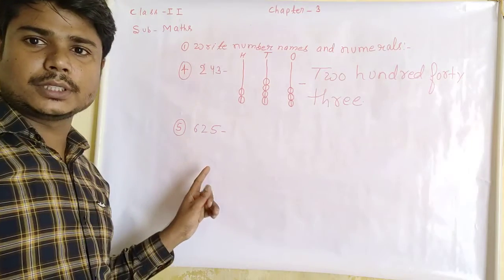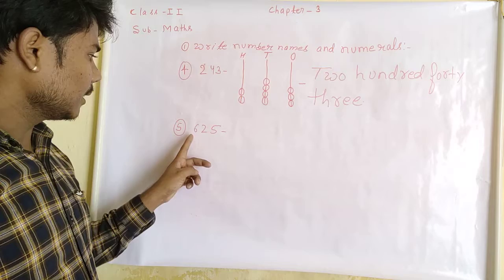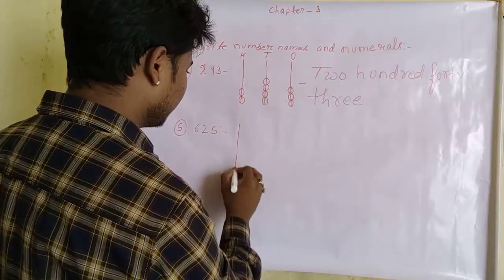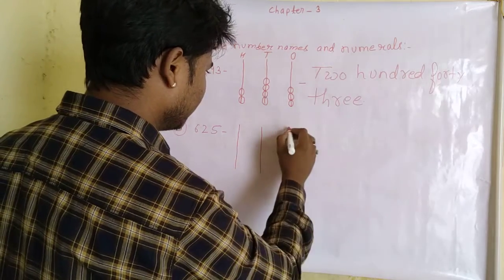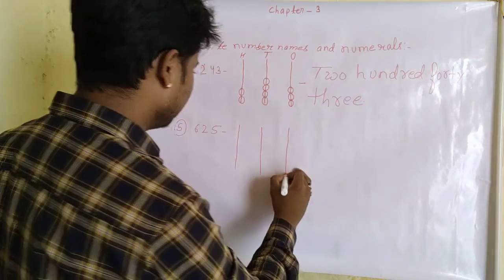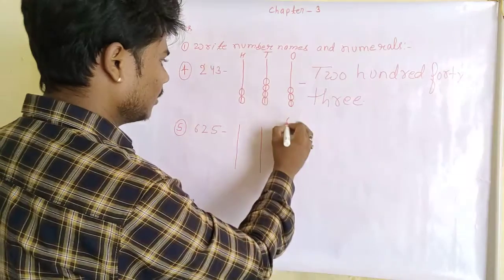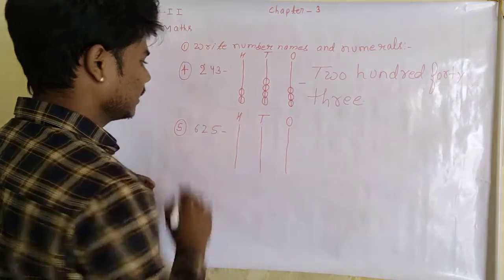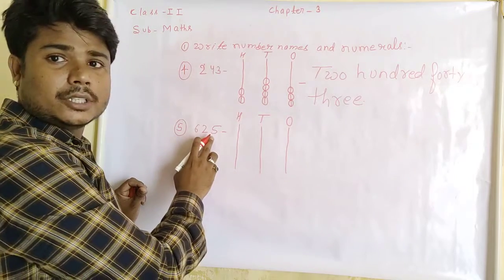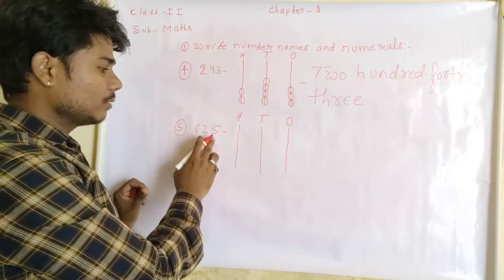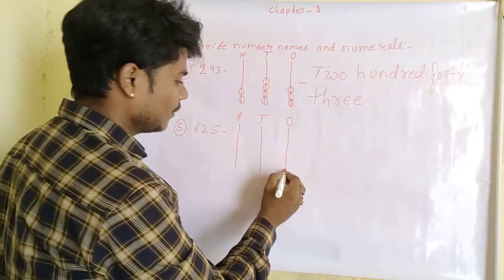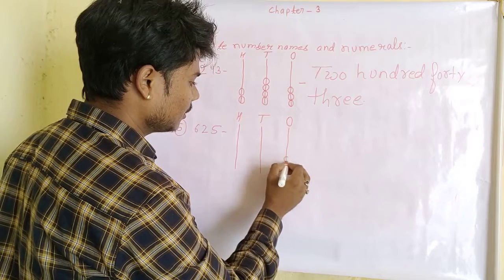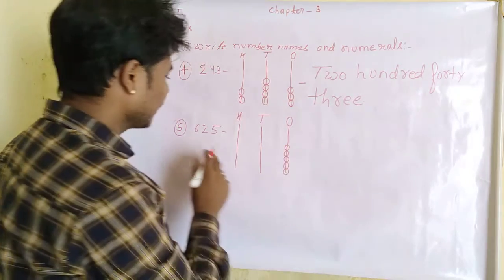Now the last question — the number is 625. Again we draw 3 vertical lines. This is ones, this is tens, and this is hundreds. The number in the ones place is 5, so we draw 5 small circles: 1, 2, 3, 4, 5.